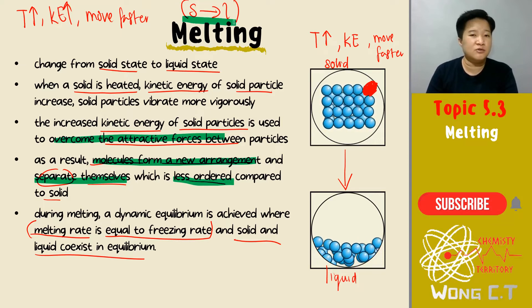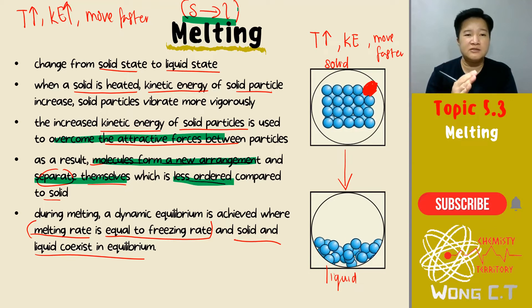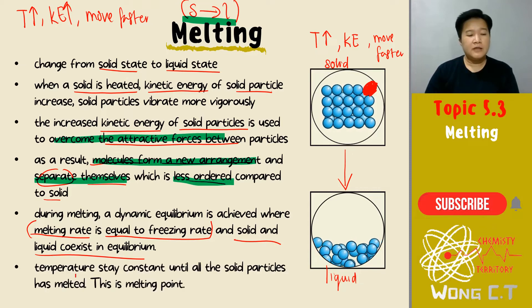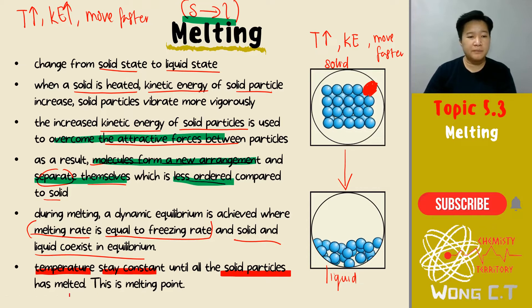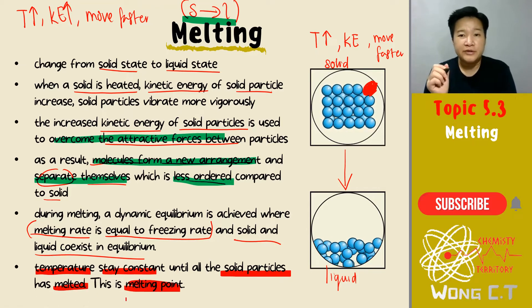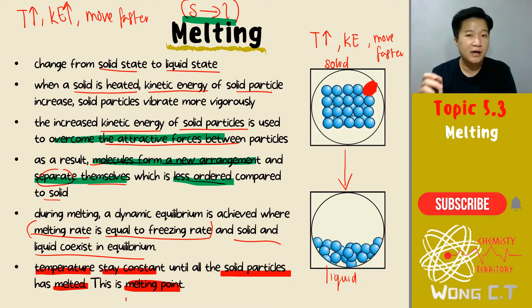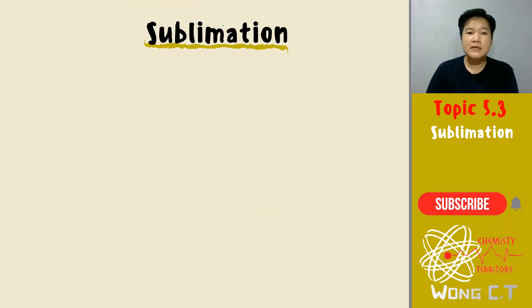When solid and liquid co-exist in equilibrium, the melting rate equals the freezing rate. For melting, temperature increases, kinetic energy increases, particles move faster to overcome the force of attraction, and they form a less ordered arrangement as liquid. The temperature remains constant until all the solid has melted — that temperature is the melting point.